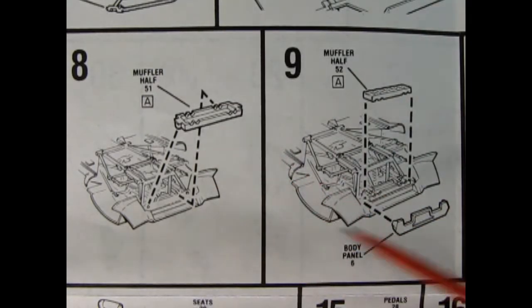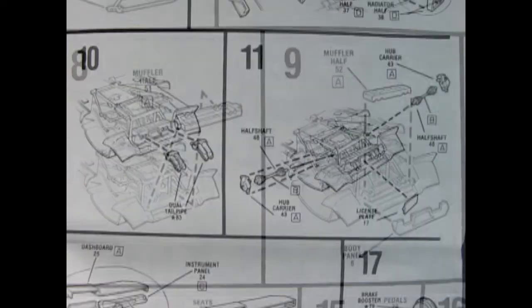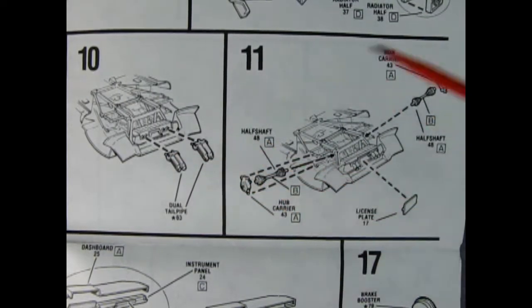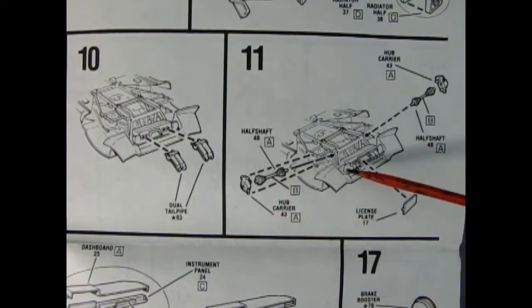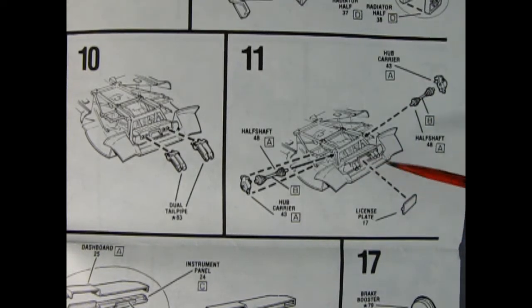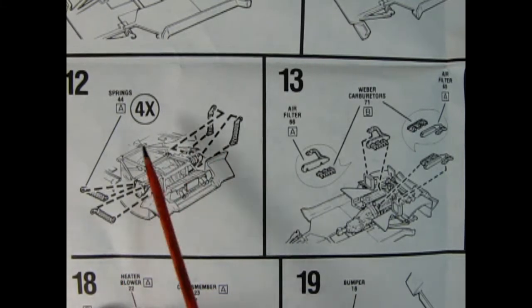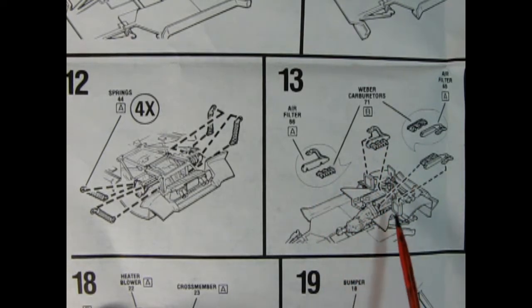Panels eight and nine show our muffler being glued together. So there's the lower portion and here's the upper portion. And then there's a body panel which glues in place. Now panel 10 shows the dual tailpipes going in place. These are chrome so again Trevor's missing it in his kit. Then we've got the half shaft and the hub carrier going in here. That of course is for our rear suspension. And we can put our license plate right between those tailpipes. Here we've got our rear springs going on and as you can see you get four of them. And then over here what do we got? We got our Weber carbs going up onto the top of the engine and our air filter as well.